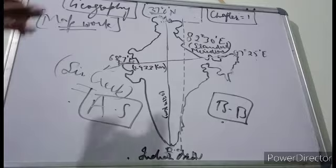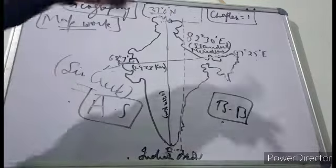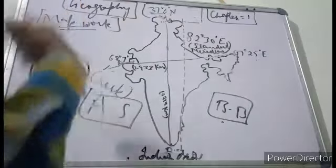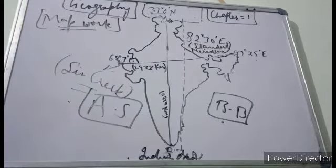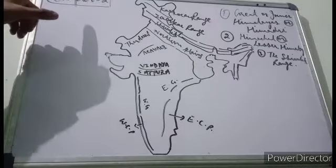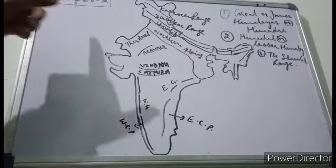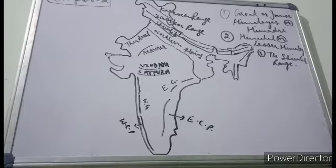That was the description of the map work for chapter number one. We shall now discuss the maps of chapter number two. I have drawn the map here. In chapter number two we shall first discuss the Himalayan ranges.